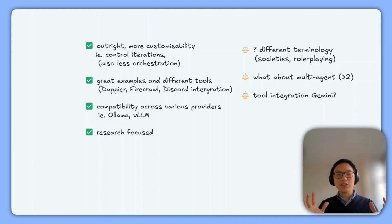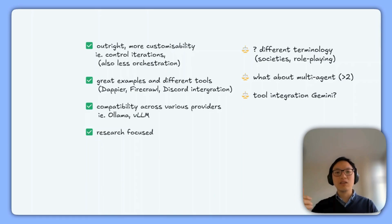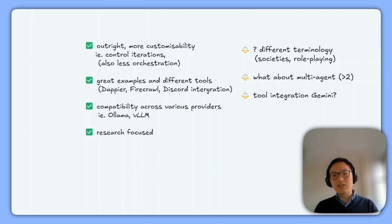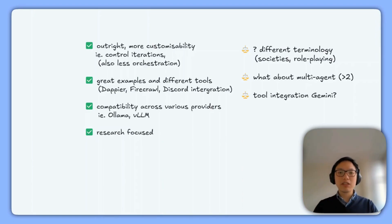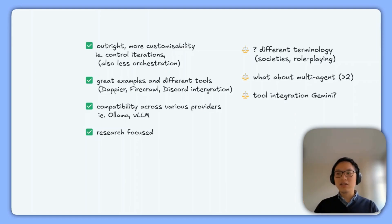Broadly, how I feel about this framework compared to others like CrewAI: I think outright there's quite a bit more customizability in the code, which is nice for fine-grained control on the number of iterations that agents talk to each other. It's a little bit less orchestration than what CrewAI does, but a lot more fine-tuned. They also have great examples of different types of apps built on this framework, and very nice integrations with different tools — real-time information via Dapia, a modern web scraping tool called Firecrawl, Discord integration, and even an AgentOps integration.